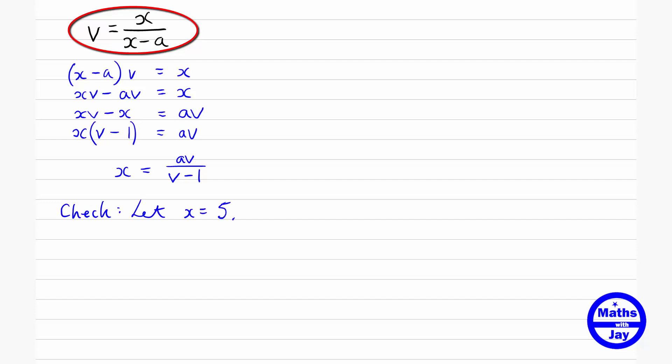So if I do that, given that situation, then v would be 5 divided by (5-2), so that's going to be 5 over 3. So what we want to do now is to check that when a is 2 and v is 5/3, that x does come out to be 5.